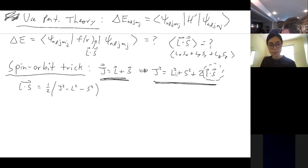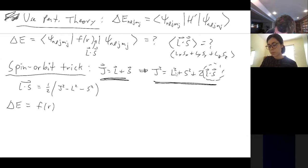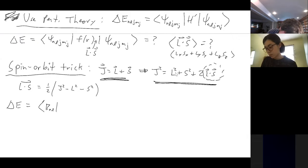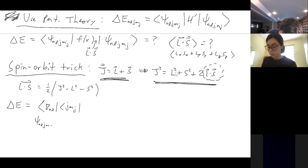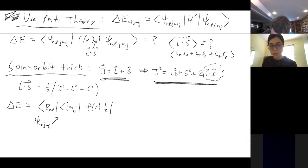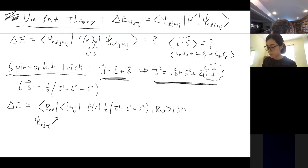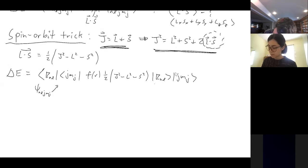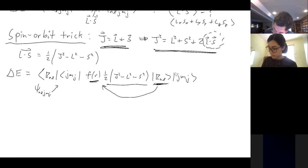Solving for L·S: L·S = ½(J squared − L squared − S squared). That's the spin-orbit trick. Now we can easily calculate the change in energy. We separate out the radial part ⟨R_NL | F(R) | R_NL⟩ times the angular momentum part. We can pull out the one-half, and we have J squared minus L squared minus S squared acting on |J, M_J⟩.